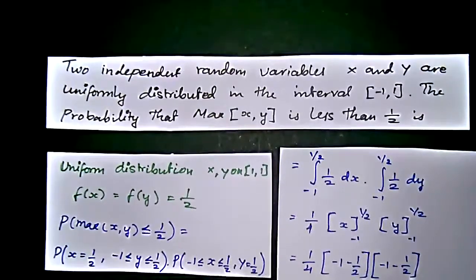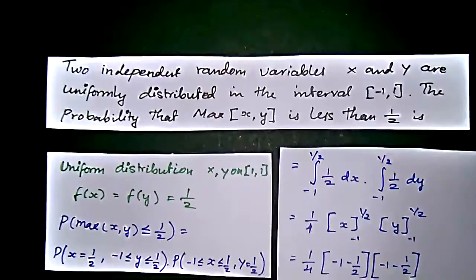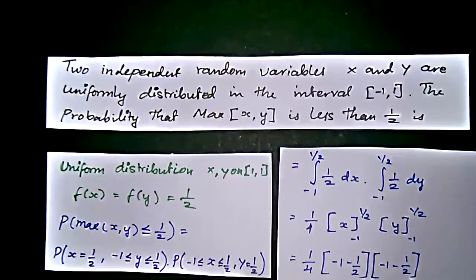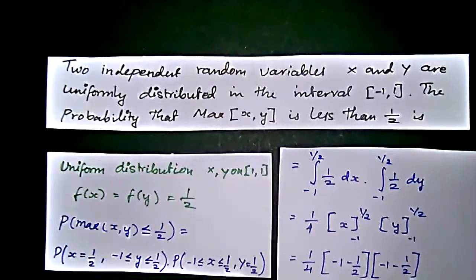Simplifying those values, we will get 9 by 4 times 1 by 4 which equals 9 by 16. This is the probability that maximum of x comma y is less than 1 by 2. The probability value is 9 by 16. Thank you.